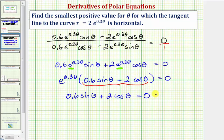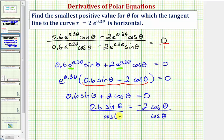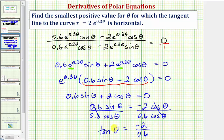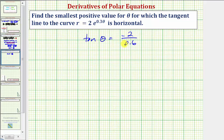Subtracting two cosine theta from both sides gives 0.6 sine theta equals negative two cosine theta. Remember, sine theta divided by cosine theta equals tangent theta. Dividing both sides by cosine theta and by 0.6, the left side simplifies to tangent theta, and the right side simplifies to negative two divided by 0.6. So tangent theta equals negative two divided by 0.6.